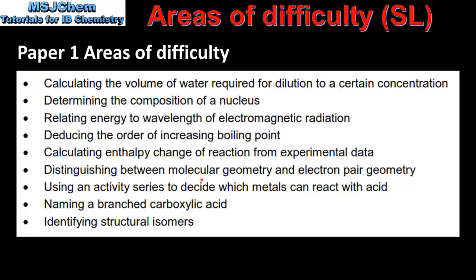Next, distinguishing between molecular geometry and electron pair geometry. For example, the molecule ammonia has the molecular geometry trigonal pyramidal. It has three bonding domains and one non-bonding domain, and its electron pair geometry is tetrahedral. Another example is water: the molecular geometry of water is bent but the electron pair geometry is tetrahedral. There are many different examples so I recommend learning these thoroughly.